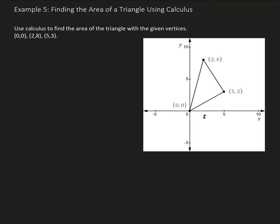In this example, we want to use calculus to find the area of the triangle with the given vertices. We're given the vertices of the origin at (0,0), (2,8), and (5,3). In order to do this, we need to first find the equations of each of the corresponding lines — the equation between the origin and (2,8), between (2,8) and (5,3), and between the origin and (5,3).